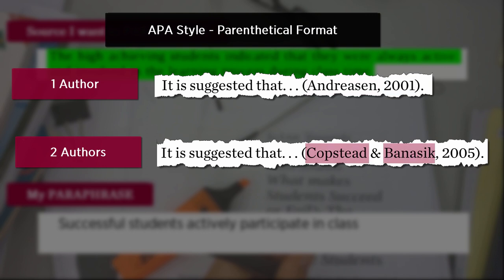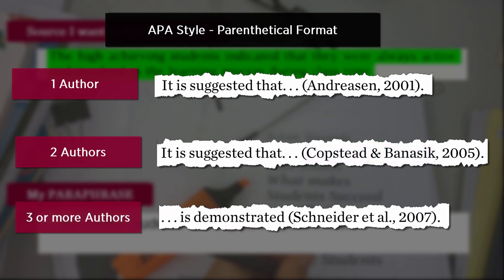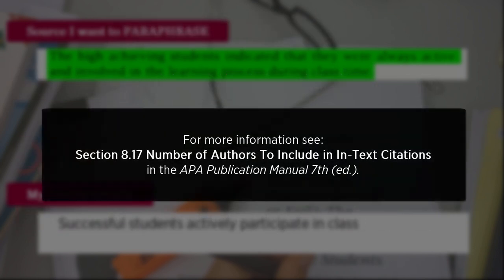When there are two authors, we give the name of both authors with an ampersand between them. When there are three or more authors, give the name of the first author and abbreviate the others to et al., meaning 'and others.' For more information, see section 8.17, 'Number of authors to include in in-text citations,' in the APA Publication Manual 7th edition.